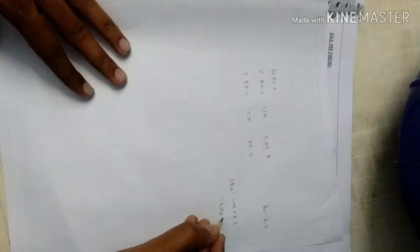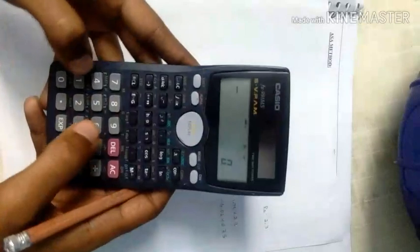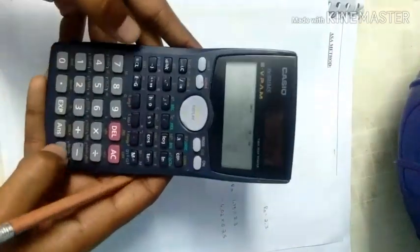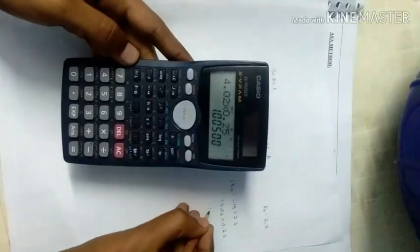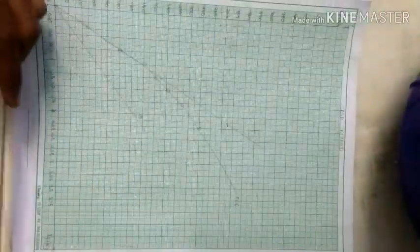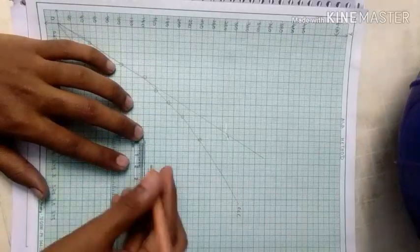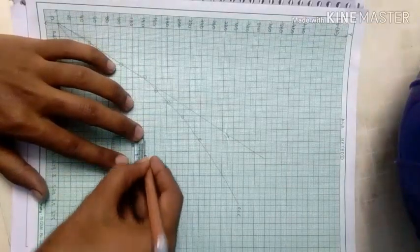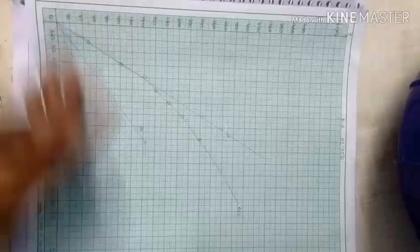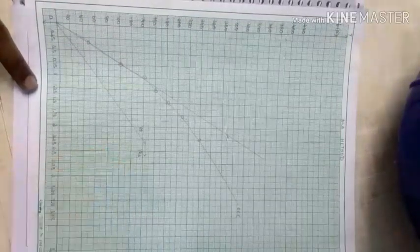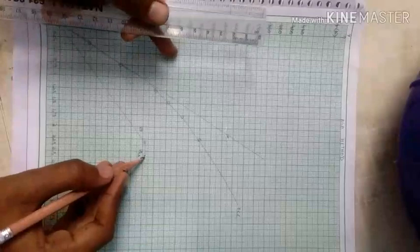Multiplying the value by 0.25, which is x-axis scale, the value will be 4.02 into 0.25 equals 1.005 ohm. With this value we draw the IA·RA, that is 1 centimeter in the x-axis. This is 1 centimeter, this is IA·RA.